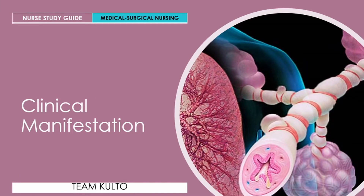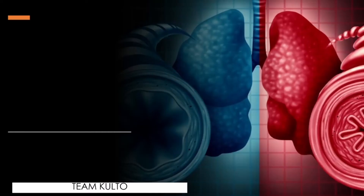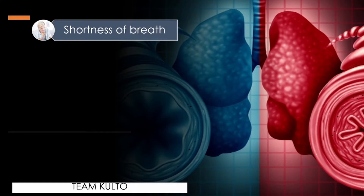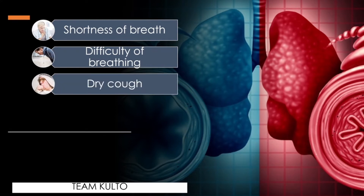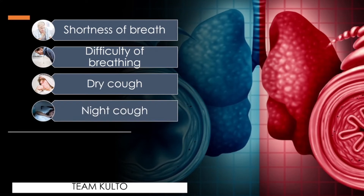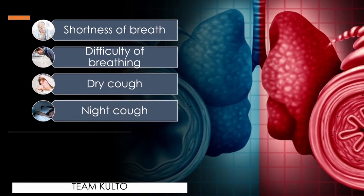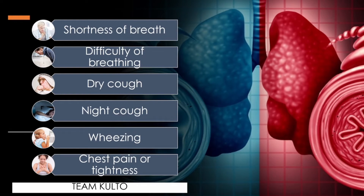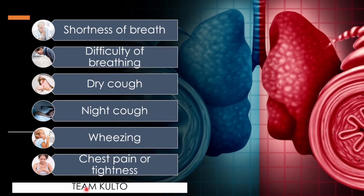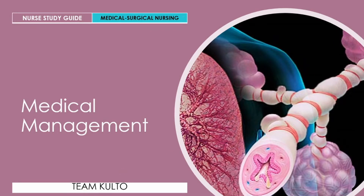What are the clinical manifestations of asthma? How do you know if a patient is having an asthma attack? You have shortness of breath, difficulty of breathing, labored breathing, dry cough — and there can be mucus production. Some asthma patients experience worsening cough during the night. Wheezing can be heard during auscultation — a high-pitched sound caused by constricted lung airways. You also see chest pain or tightness. These are the clinical manifestations of asthma.